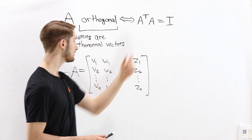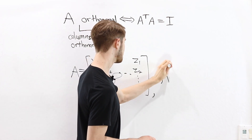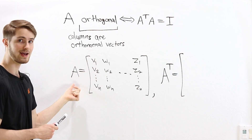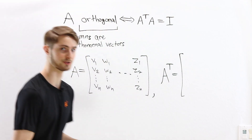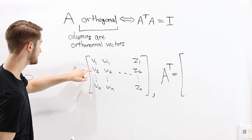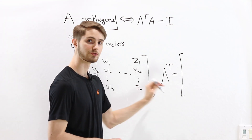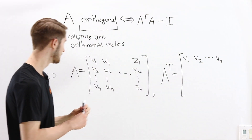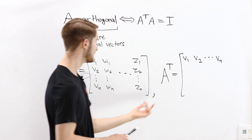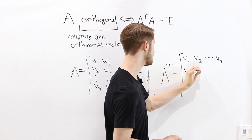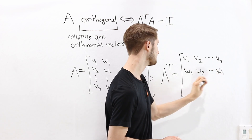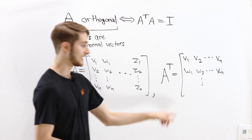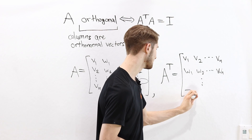To check the equation A transpose A equals the identity, we also need to know A transpose. When we take the transpose of A, the columns of A become the rows of A transpose. So the first column of A — v1, v2, down to vn — becomes the first row of A transpose. The second column, all the coordinates of w, becomes the second row, and the last column z becomes the last row of A transpose.